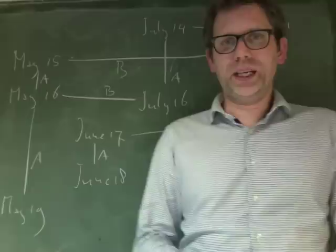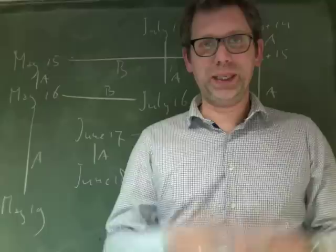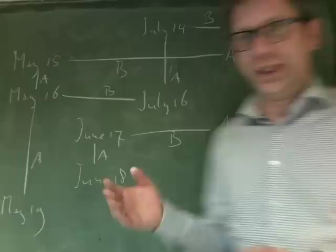People have pointed out this dynamic epistemic logic puzzle about Cheryl's birthday to me, and I thought it would be nice to explain it using actual dynamic epistemic logic and a Kripke model.